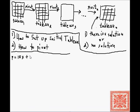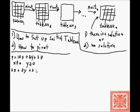Let's consider this problem. The objective function is p equals 10 times x plus 6 times y plus 2 times z, with x ≥ 0, y ≥ 0, z ≥ 0. The constraints are 2x plus 2y plus 3z less than or equal to 160.